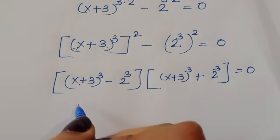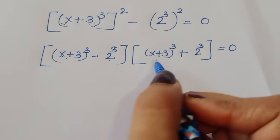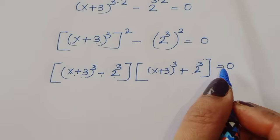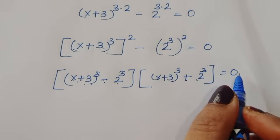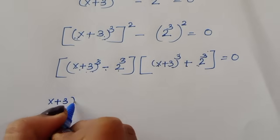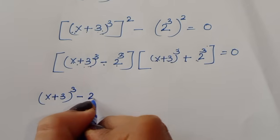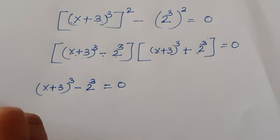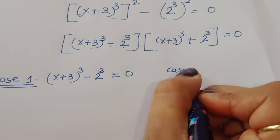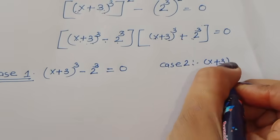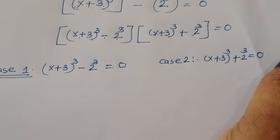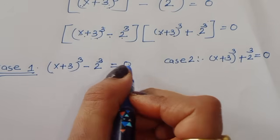Now we can see this gives us a cube minus b cube and a cube plus b cube. So we got two equations: Case 1 is (x+3)^3 − 2^3 = 0, and Case 2 is (x+3)^3 + 2^3 = 0.